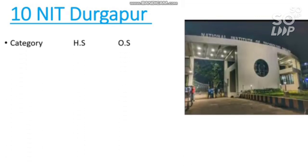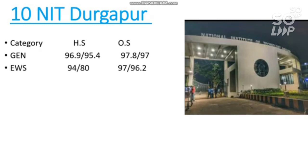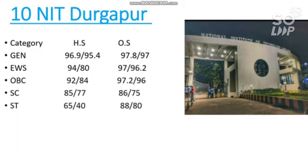NIT Durgapur, number 10 NIT — mechanical branch category-wise cutoff for home state and other state: For General home state 96.9 percentile required, 95.4 for female, and for other state 97.8 for male and 97 for female. For EWS other state 97 and 96.2, for OBC 97.2, for SC 86, and for ST 88 percentile.